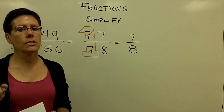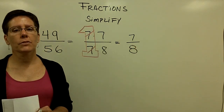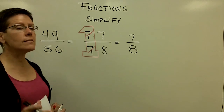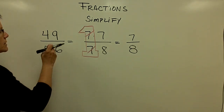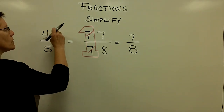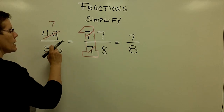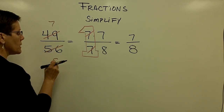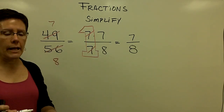If you can see before doing any factorization that a 7 divides into both the numerator and into the denominator, go ahead and reduce quickly like that.